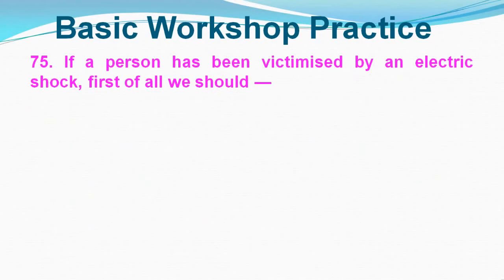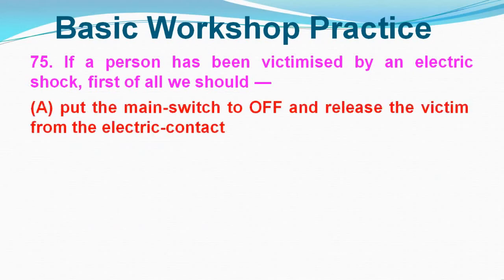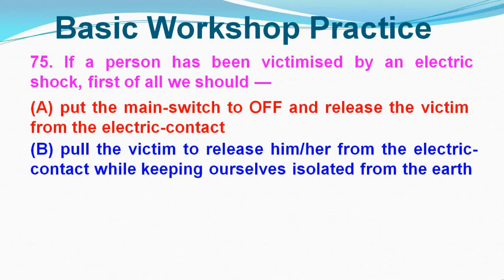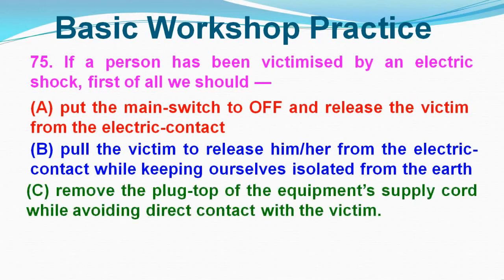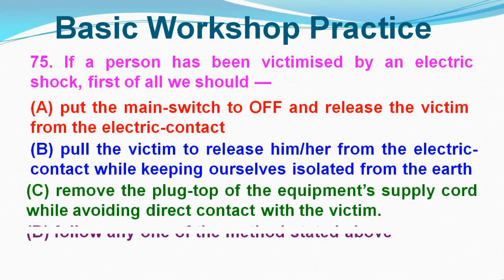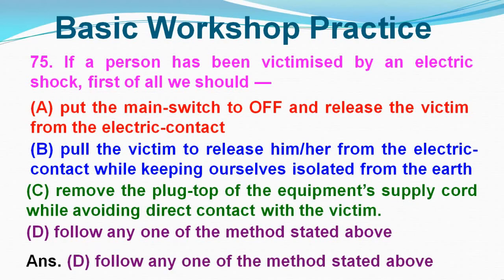Question No. 75: If a person has been victimized by electric shock, first of all we should do which of the following? Option A: Put the main switch to off and release the victim from electric contact, Option B: Pull the victim to release them from electric contact while keeping ourselves isolated from the earth, Option C: Remove the plug top of the equipment supply cord while avoiding direct contact with the victim, Option D: Follow any one of the methods stated above. Correct answer is Option D.